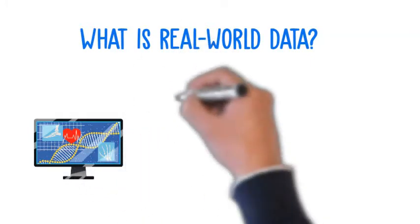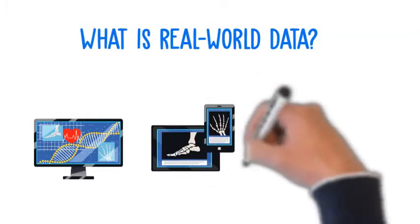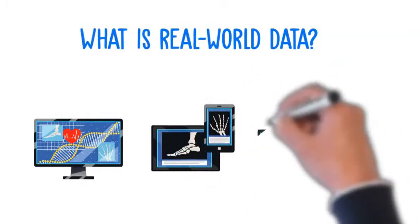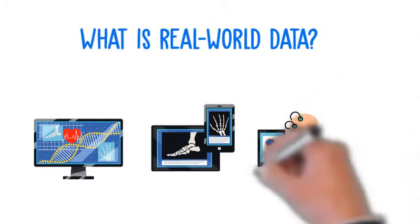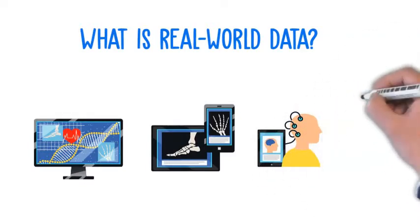The FDA is a little clearer about the sources of real-world data. They include things like electronic health records, claims and billing activities, product and disease registries, patient-generated data, and data gathered from other sources that can inform on health status, such as mobile health devices.